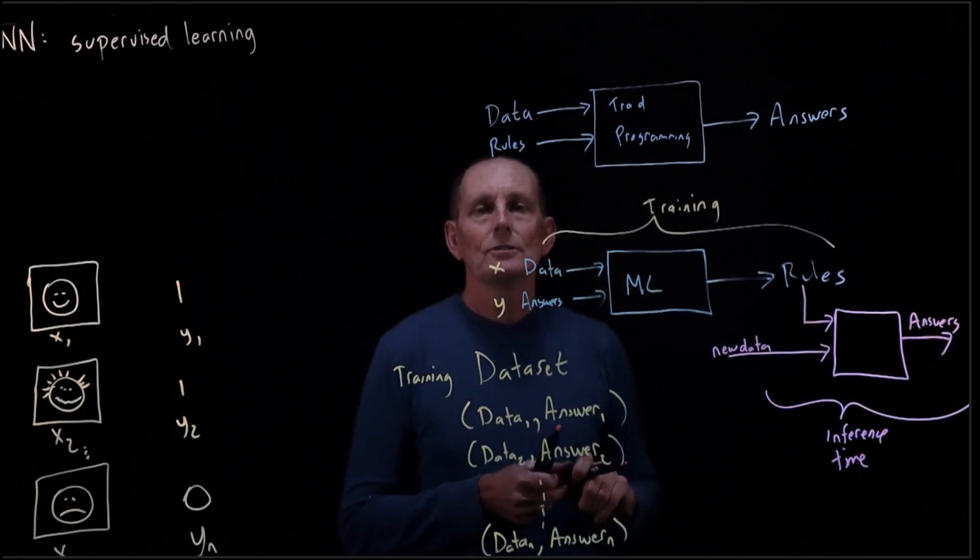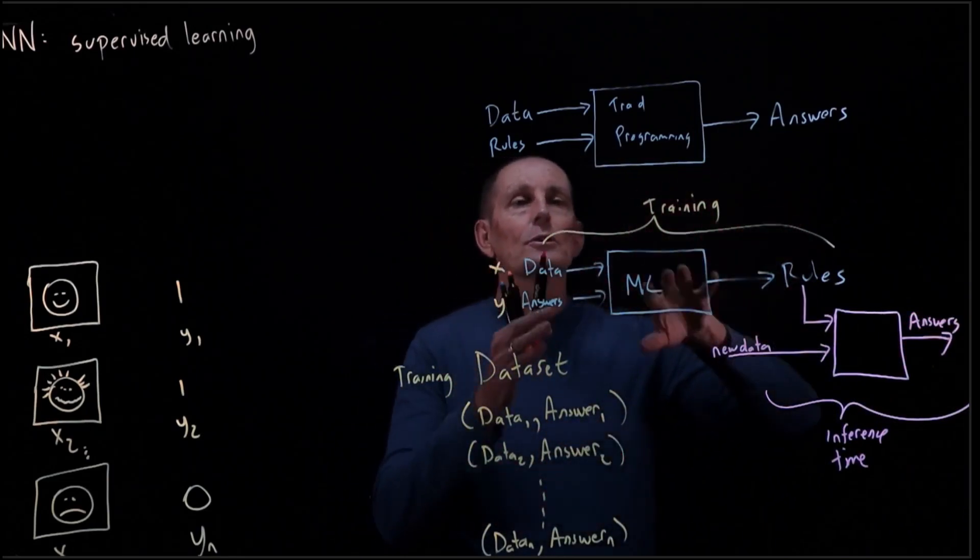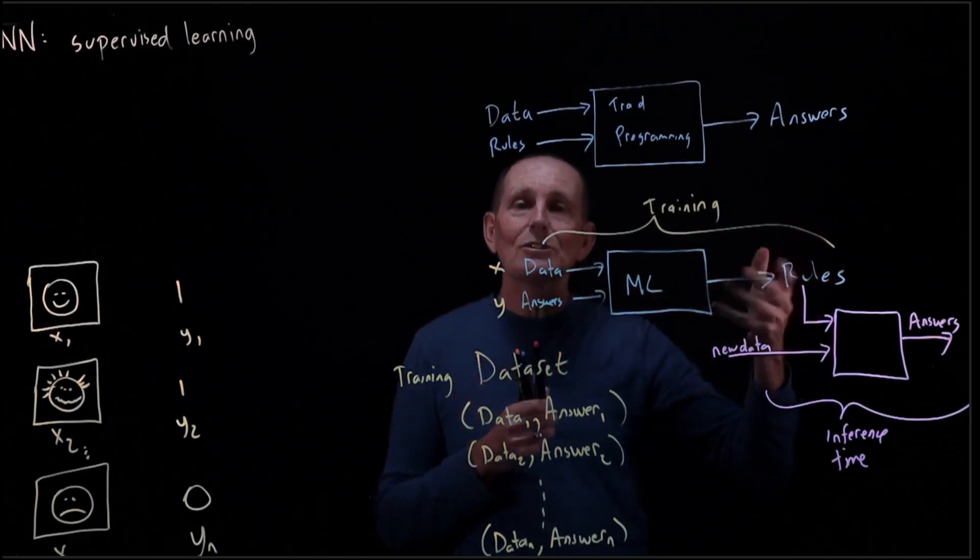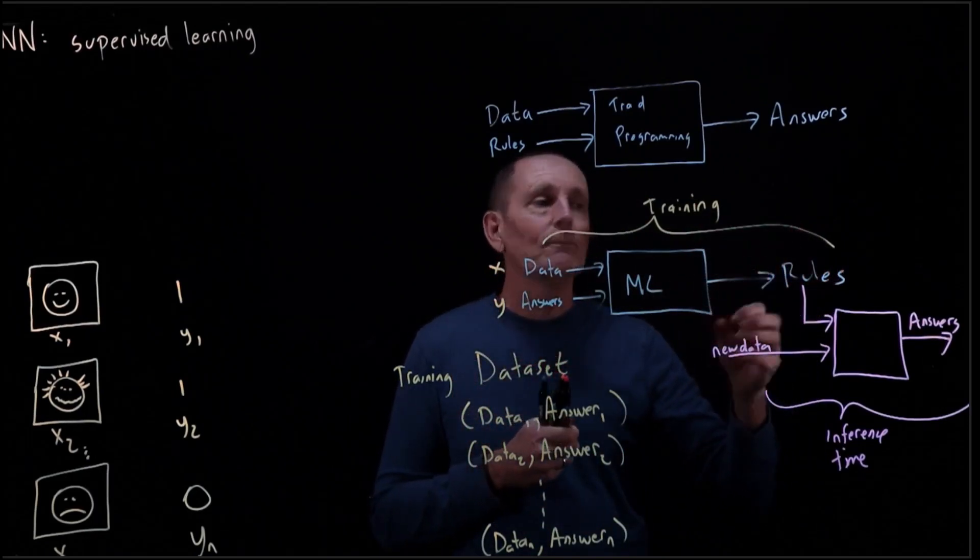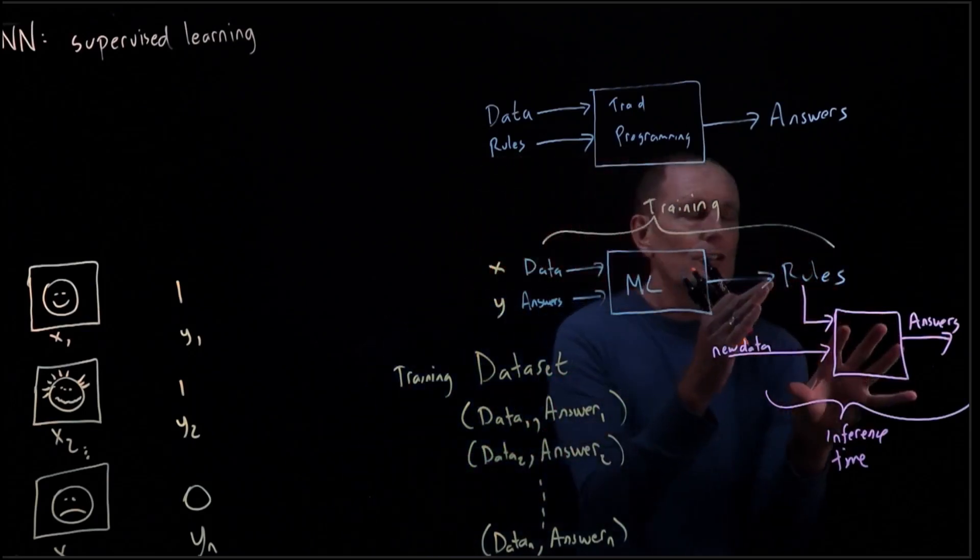So there's two steps to machine learning. One is this training phase where we're going to go through, take a bunch of training data and come up with rules. And then once we have done that training, we've got these rules, we can go ahead and deploy these rules and then just do inference.